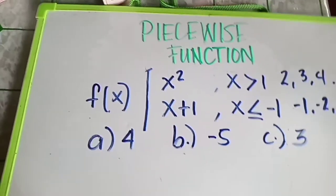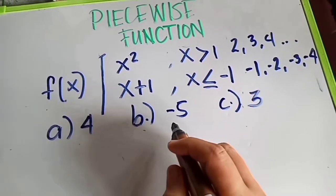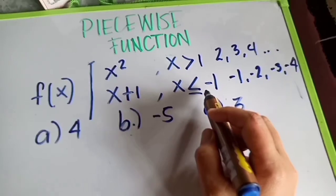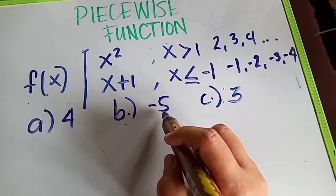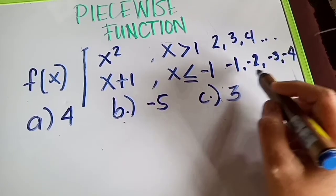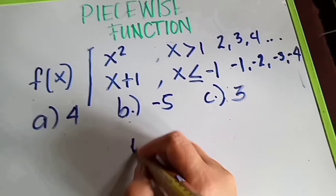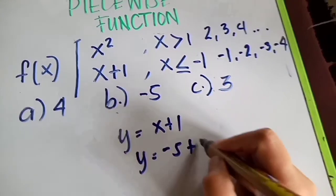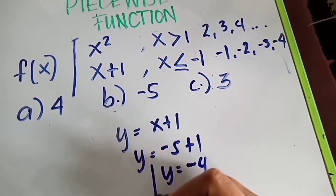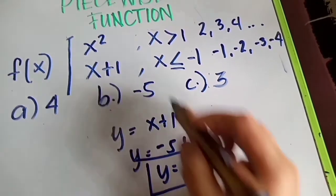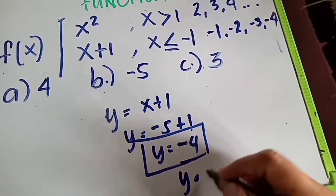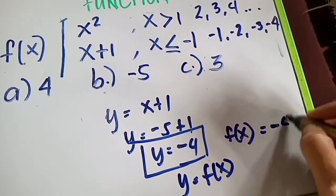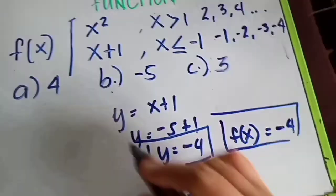Now how do we solve for letter B, which is negative 5? We check that x less than or equal to negative 1 qualifies for negative 5, because the numbers include negative 1, negative 2, negative 3, and so on. So we use y equals x plus 1: y equals negative 5 plus 1, which gives y equals negative 4. So this is the final answer for letter B.